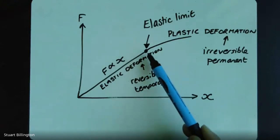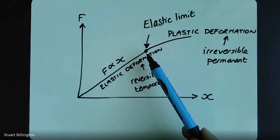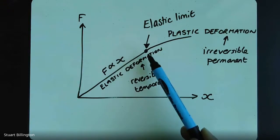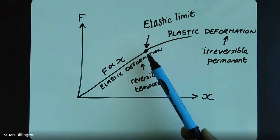At some point we will get to where the external force actually succeeds in breaking some of the atomic bonds holding the material together at a molecular scale. When that happens, the atoms inside the material will actually rearrange permanently. In a metal like the spring we were dealing with, the atoms tend to be arranged in a big superstructure called a metal lattice, and what often happens is that an entire plane of the lattice - an entire sheet of atoms - slides over the sheet below it, meaning the material permanently extends in length on a macroscopic scale.